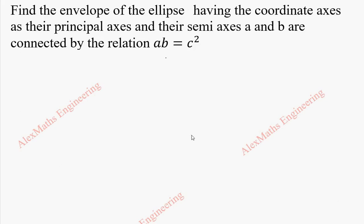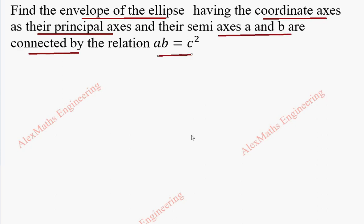Hi students, this is Alex here. In this video, we are going to find the envelope of the ellipse, having the coordinate axes as their principal axes and their semi-axes a and b connected by the relation ab equal to c square. The ellipse equation is x square by a square plus y square by b square equal to 1.